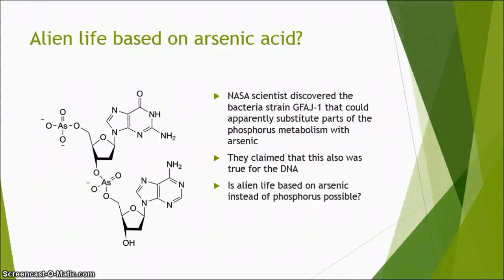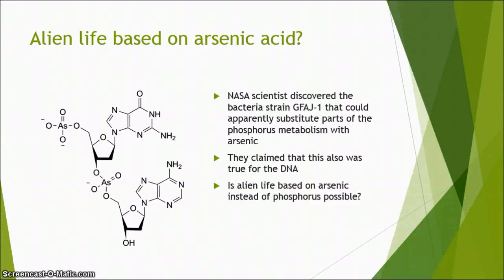A few years ago, a science paper was published by NASA scientists in which they claimed that they had found a bacterial strain GFHA1, which was apparently able to incorporate arsenic into its metabolism instead of phosphorus if the bacteria were short of phosphorus. They also claimed that arsenic was incorporated into major biomacromolecules, like for example DNA.